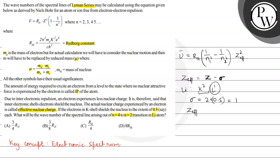So z effective is z minus sigma. Z value for lithium is 3 since its atomic number is 3, minus sigma is 1. So this equals 2. So z effective value is 2. And we have n1 equals 2 and n2 equals 4.